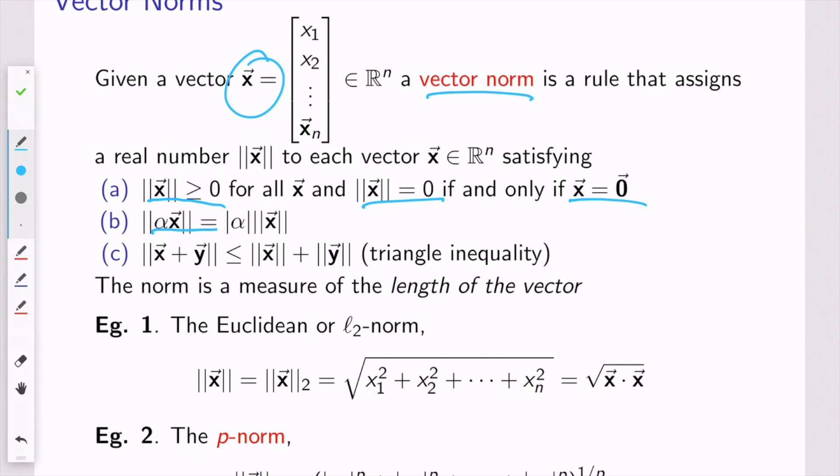It should have this scaling property, whereby if I take a vector x and multiply it by three and take the norm, that's the same as three times the norm of the original vector x. And then it should satisfy the triangle inequality here.